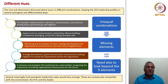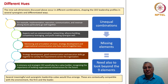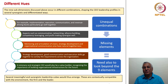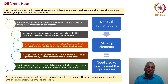Aspects such as communication, networking, alliance building, competency leveraging and profit-making synergize well. Mentoring and articulation of vision, strategy development and organizational communication have a natural togetherness. Strategy development, good communication and execution skills go together to convey requirements across the organization. A visionary and strategist CEO would also be a value builder, focused on building long-term value through the distant horizon. There could be unequal combinations as well as missing elements. At times there would be a need to look beyond these nine elements — we will cover those as we go along.